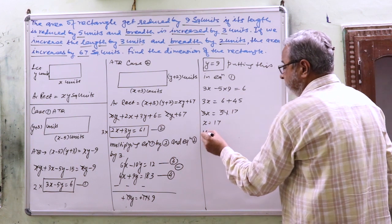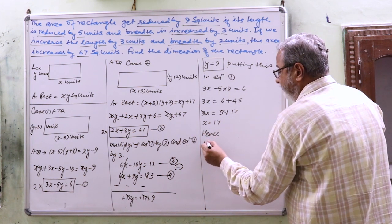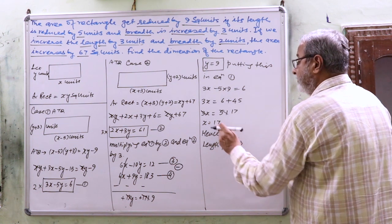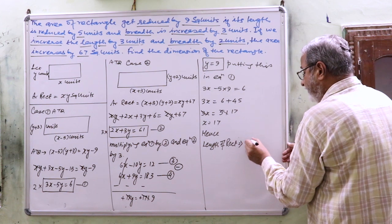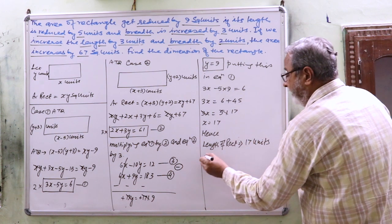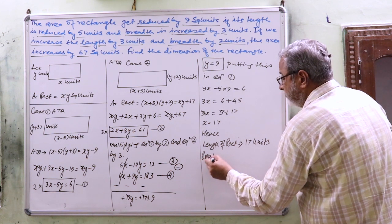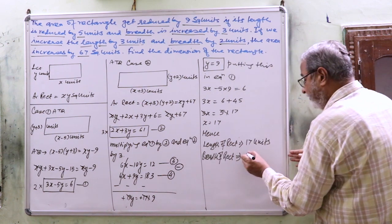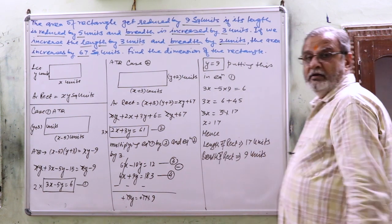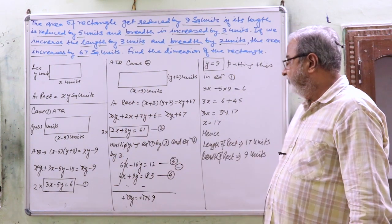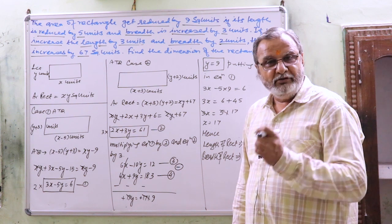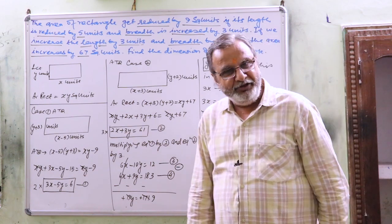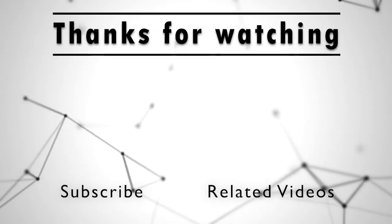Hence, the length of the rectangle, that is x, is 17 units, and the breadth of the rectangle, that is y, is 9 units. So we have solved this question. It is a very good question. Kindly solve the related questions from the textbook and NCERT exemplars. Thank you.